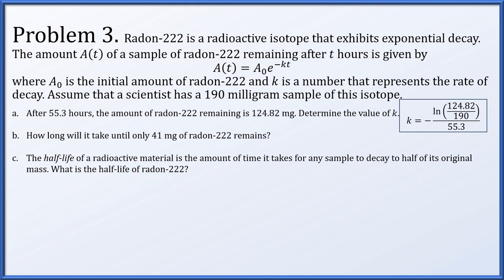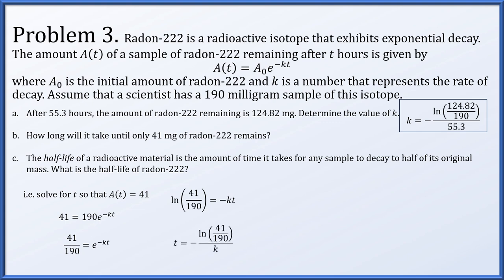Part b: how long until only 41 milligrams remain? We set A(t) equals 41, so 190 times e to the negative kt equals 41. Dividing by 190, taking the natural log, and dividing by negative k gives t equals negative ln(41/190) divided by k. Substituting the expression for k from part a and simplifying — noting that the two negative signs cancel — gives t equals 55.3 times ln(41/190) divided by ln(124.82/190).